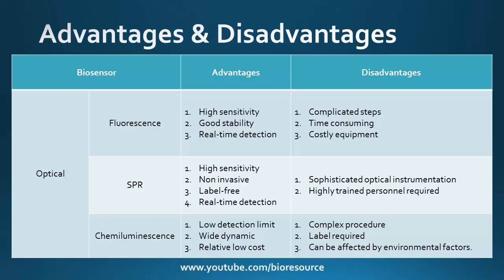Let's look at the advantages and disadvantages of optical biosensors. These can be further classified by detection method: fluorescence-based detection, SPR-based detection, and chemiluminescence. The advantages of fluorescence-based detection are that it is very sensitive, has very good stability, and real-time detection is possible. Disadvantages include complicated steps, the test is time-consuming, and it requires costly equipment since optics are needed to capture the fluorescence signal.